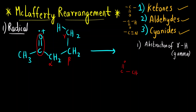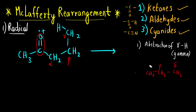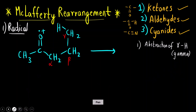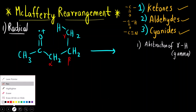This is a carbonyl group. Next carbon is alpha, next to alpha is beta, then next to beta is gamma, and then next to gamma is delta — alpha, beta, gamma, delta and so on. So what we are interested in is the abstraction of the gamma hydrogen. The carbonyl group — specifically this pi bond — is going to abstract the gamma hydrogen.